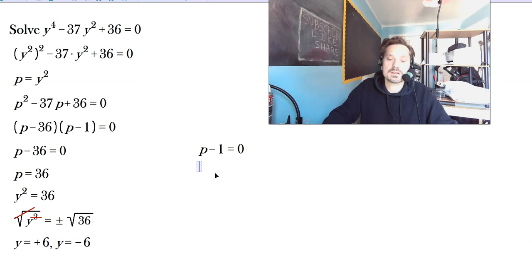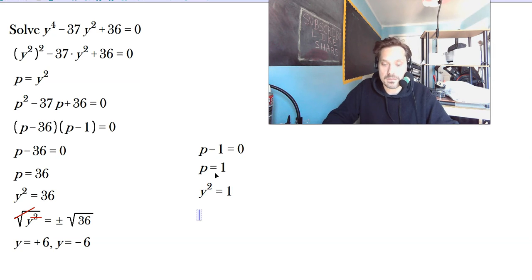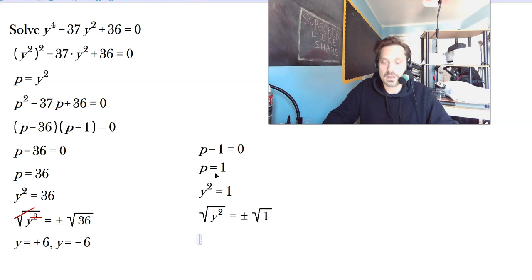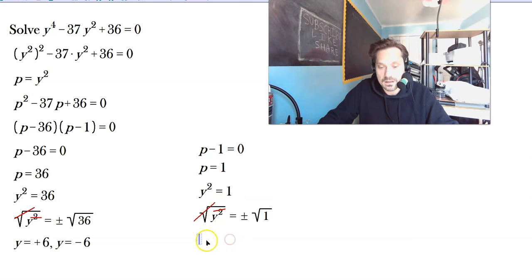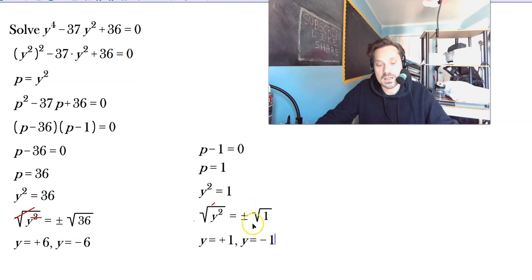From p minus 1 equals 0, p equals 1. Since p is y squared, y squared equals 1. Take square roots: the square root of y squared equals plus or minus the square root of 1. These cancel on the left, so y equals positive 1 or y equals negative 1, since the square root of 1 is 1.